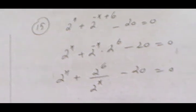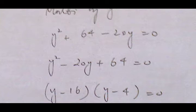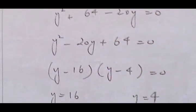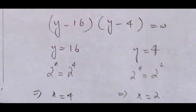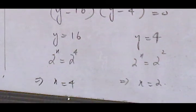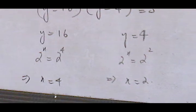In the next question we have 2^x · 2^(−x) · 2^6. We separate these powers: 2^(−x) can be written as 2^6 over 2^x. We replace 2^x by y and multiply both sides by y, giving the equation y² minus 20y plus 64. Factorizing: factors are minus 16 and minus 4, so y equals 16 and y equals 4. Since y equals 2^x: 16 equals 2⁴ gives x equals 4, and 4 equals 2² gives x equals 2.